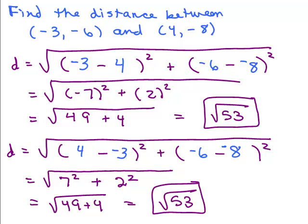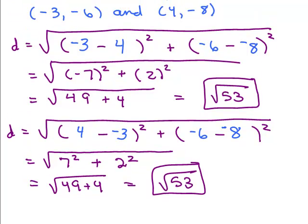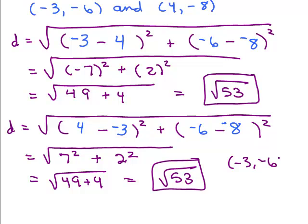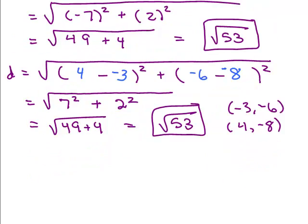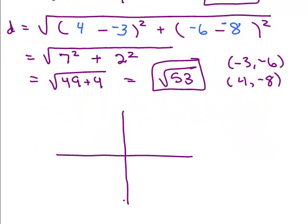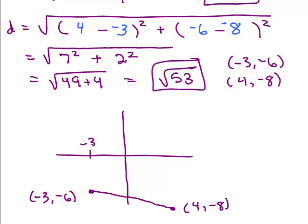If asked to round to the nearest tenth, get out your calculator. You could also plot these points to get an idea of where they are on the graph. Negative 3, negative 6 is somewhere down in the third quadrant, and 4, negative 8 is nearby. Does that look like a distance of about 7? You can see if your picture makes sense.